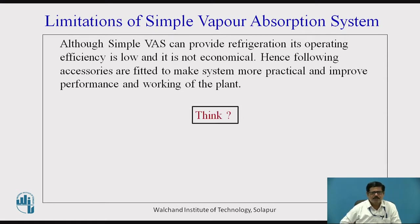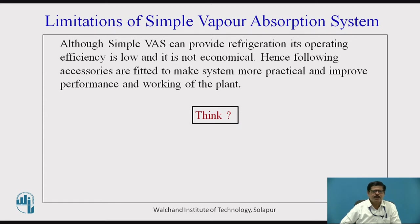Now let us think for a while how we can improve the performance of simple ammonia water vapor absorption system. We have seen the equation of COP of simple vapor absorption system as QE upon QG, ratio of QE upon QG, where QE is the heat absorbed in the evaporator and QG is the heat supplied in the generator. So for increasing the COP, either we have to increase QE, that is heat absorbed in the evaporator which is nothing but the refrigerating effect, or we have to reduce the heat supplied in the generator. That will give us the increase in the value of coefficient of performance.